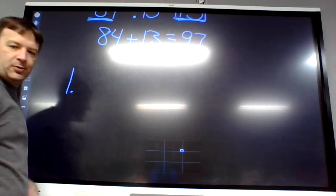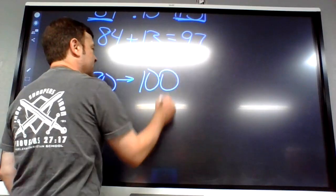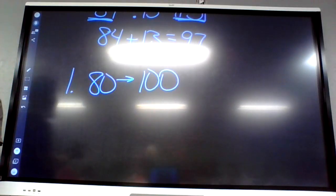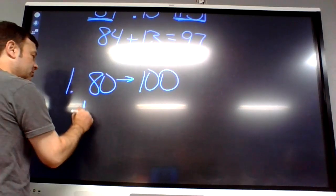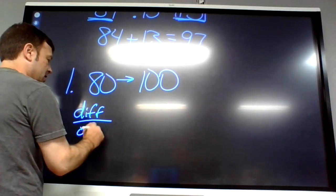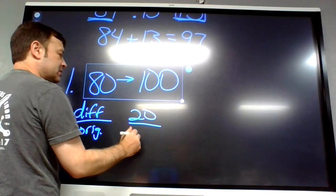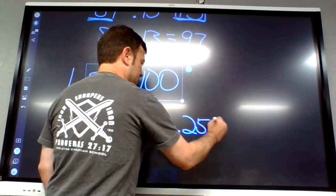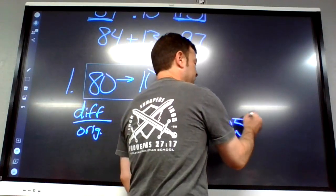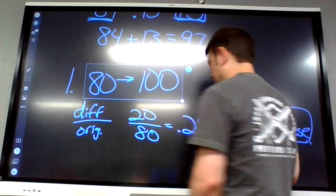Now we're ready. Number one: we're going from 80 to 100. Can anybody tell me the formula for percent change? Difference divided by original. What's the difference? 20. What's the original? 80. Remember what this came out as? It's a 25 percent increase.